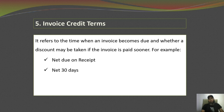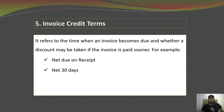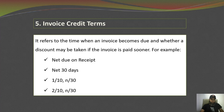Net 30 days means if you receive an invoice on the 20th of September, it becomes due after 30 days — on the 19th or 20th of October. The term 1/10 net 30 means the payment term is 30 days, but if you pay within 10 days you get a 1% discount. Similarly, 2/10 net 30 means the payment term is 30 days, but if you pay within 10 days you get a 2% discount on the invoice.